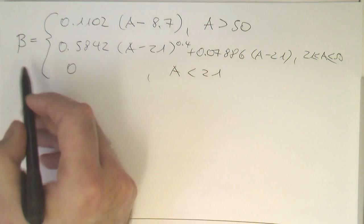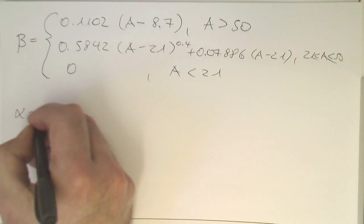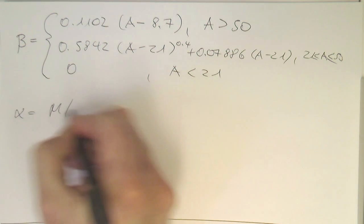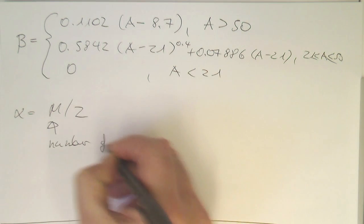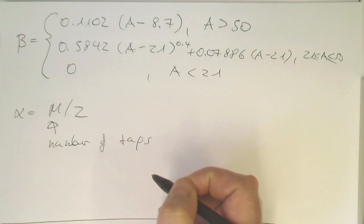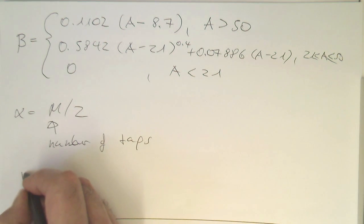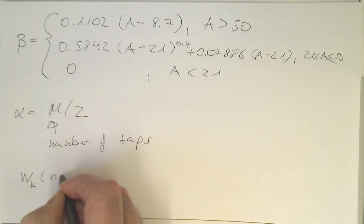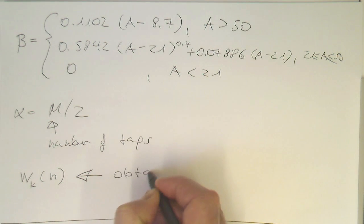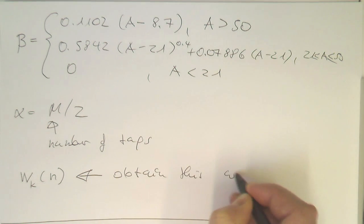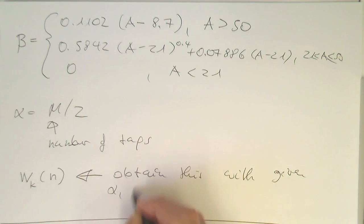Once we have beta, we only need to define our alpha. Alpha is simply M divided by 2 — half the number of taps. With that, we get our window function W_K of n, given alpha and beta.